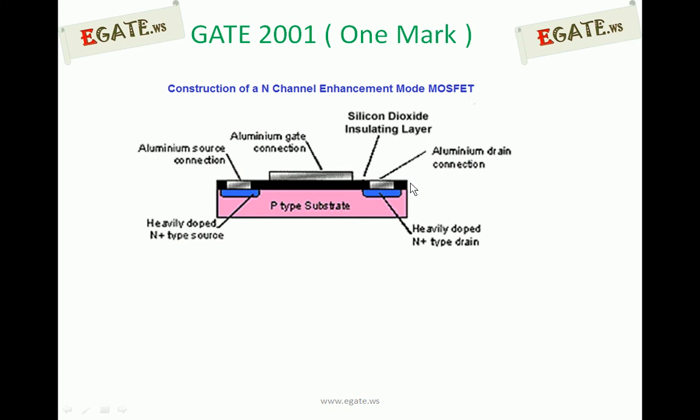So these are ohmic contacts. Aluminum source connection, aluminum drain connection, aluminum gate connection — we can make contacts for all three regions: gate, drain, and source. Initially, whenever we are not applying gate voltage, for the enhancement mode MOSFET there will be no channel. By applying voltage across the gate terminal we must enhance the channel — that's why the name has come. For N-channel, the gate voltage must be positive, and for P-channel the gate voltage must be negative to enhance the channel.